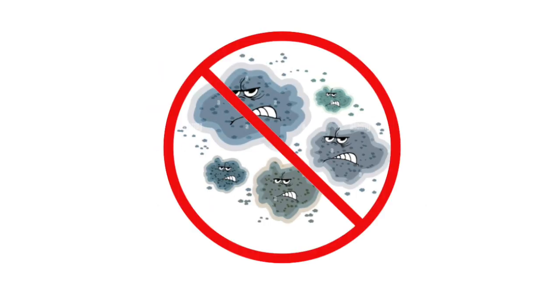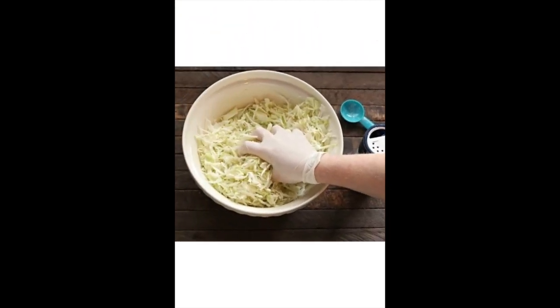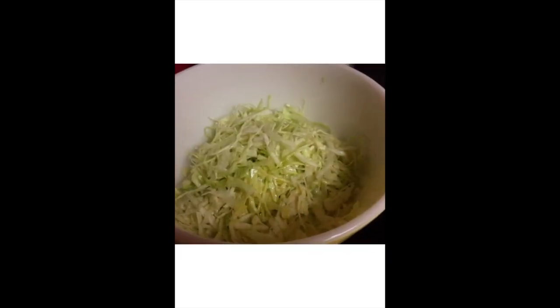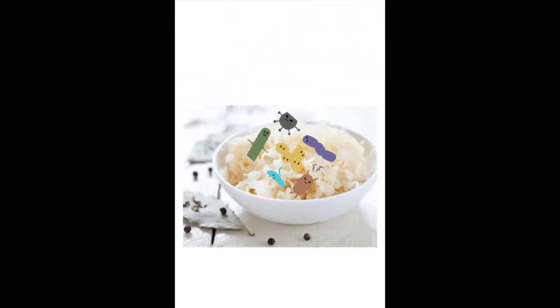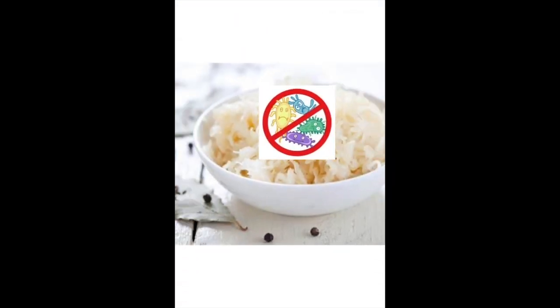This prevents bad microbes like fungi from growing. Usually 1–2% non-iodized salt is added to the shredded cabbage and mixed until water seeps out of it to form a brine solution. This creates an osmotic gradient that draws out sugary juice, which is what lactic acid bacteria ferment. The salt makes the juice concentrated, thus reducing the water activity. Unwanted microbes such as mold, yeast, and other bacteria that are less tolerant to salt are inhibited by osmotic pressure. This preserves the sauerkraut and also adds flavor to it.